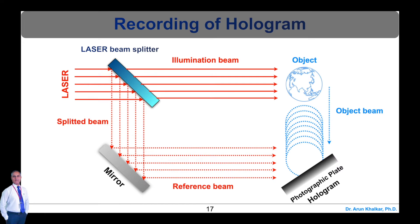The object beam reflected from the object interferes with the reference beam when both beams reach the photographic plate. The superposition of these two beams produces an interference pattern in the form of dark and bright fringes, and thus this pattern is recorded on the photographic plate. The photographic plate with recorded interference pattern is called hologram.